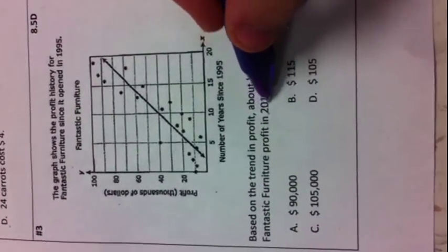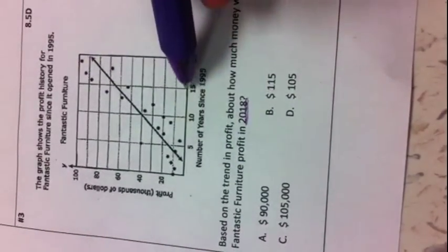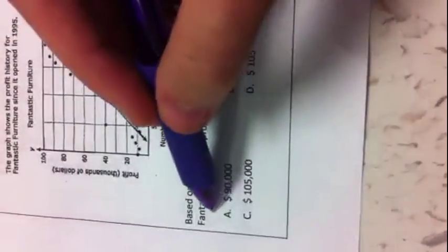It's asking what the profit's going to be in 2008. So you follow the line, and it goes all the way up to 20. So it's 15, 16, 17, 18. You follow that line up, and it goes out to like 90, about right here. So the answer is A.